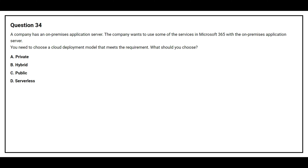Question number 34. A company has an on-premises application server. The company wants to use some of the services in Microsoft 365 with the on-premises application server. You need to choose a cloud deployment model that meets the requirement. Option A: private. Option B: hybrid. Option C: public. Option D: serverless. The correct answer is Option B: hybrid.